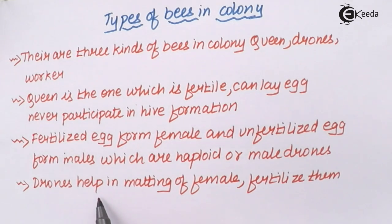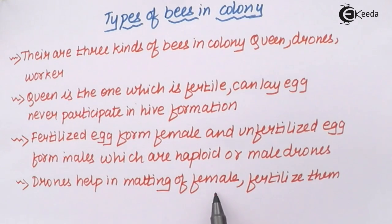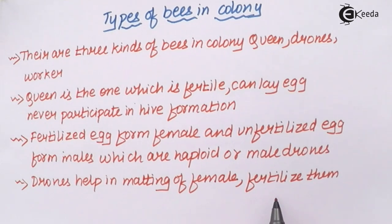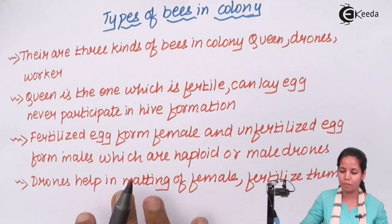Drones are the ones which help in mating of the female. They can be said as the male counterpart. They fertilize the females in simple language.